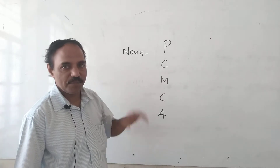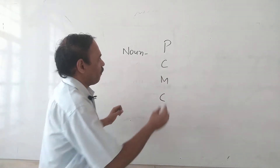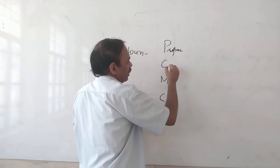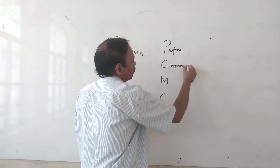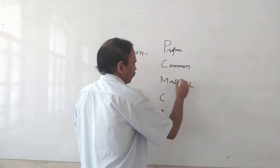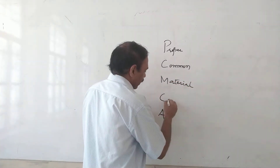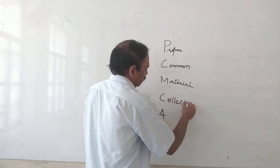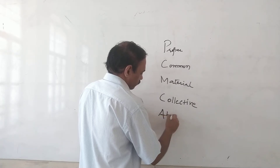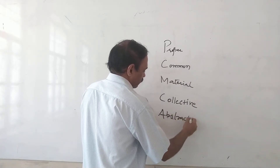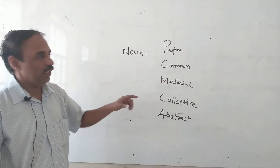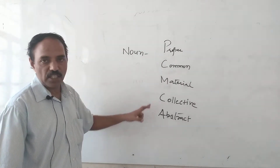So I have written an essay. P stands for Proper Noun, C for Common Noun, M for Material Noun, again C for Collective Noun, and A for Abstract Noun. P, C, M, C, A - which is like Chemistry, Mathematics, Chartered Accountant. Simple.